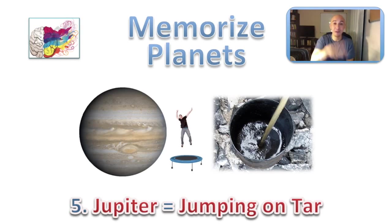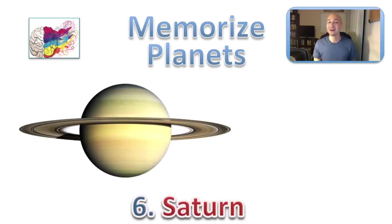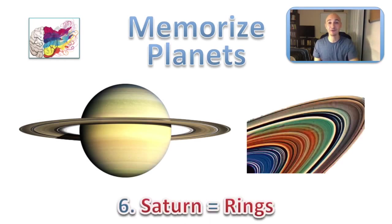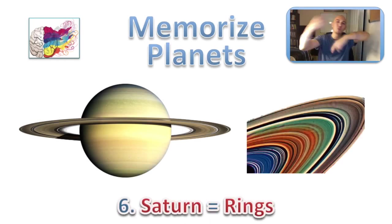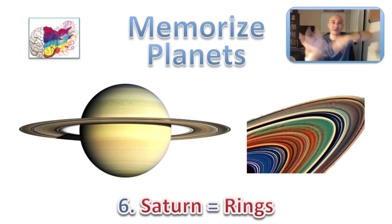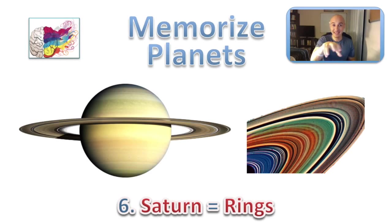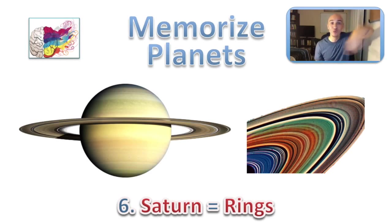Sixth planet is Saturn. Picture your sixth location and add rings — maybe hula hoop rings going round and round. Whatever you picture when you think of rings, attach that to your sixth location to remind you of Saturn with its iconic rings.